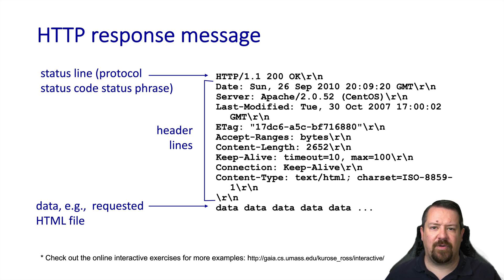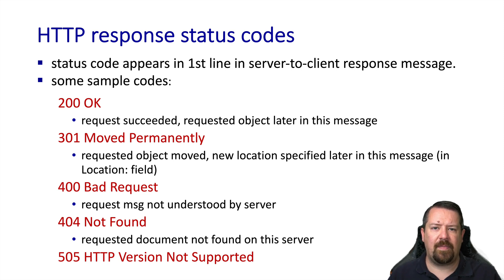In the first line of the response, we see the status confirming the HTTP protocol version and whether the server is able to service the request. In this case, the 200 indicates a successful response. The server provides the system time, the application and version of the server software running, and information about the particular object requested, such as when it was last modified and its size in bytes. The header ends with a duplicate carriage return newline, and then the body follows containing the object requested. Common HTTP status codes include 200 OK for a successful response, 300-series codes indicating the object was moved with a new location specified, 400-series errors such as bad request or 404 not found, and 500-series errors which usually indicate a problem on the server side.